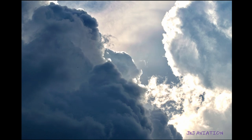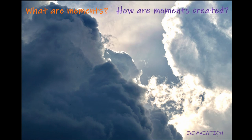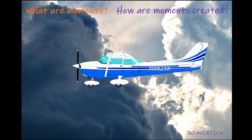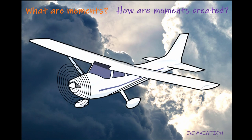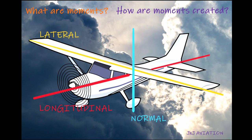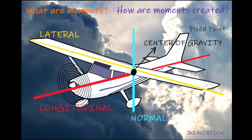What are moments and how are these moments created? A moment can be defined as the tendency of an object to rotate about a certain axis or about a particular point. The primary flight controls create a moment about the three axes — longitudinal, lateral and normal axis — or about the center of gravity. The center of gravity can be considered as a fixed point within the aircraft.